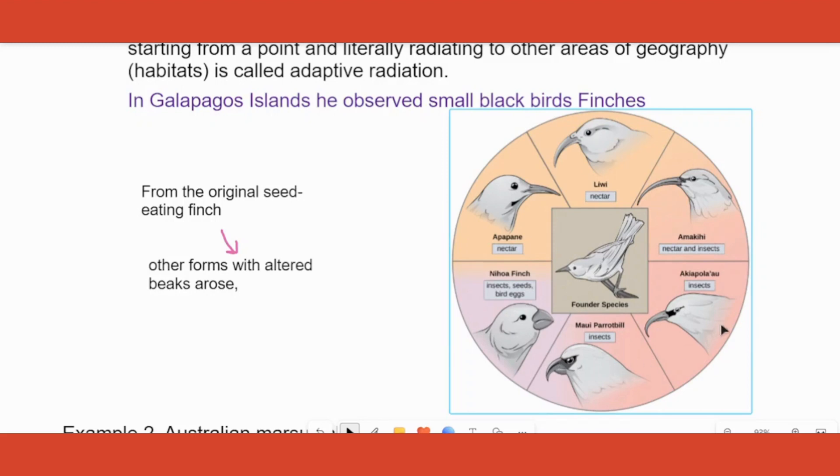So depending on what food was available they all evolved. Now after evolving they started flying out to the different habitats of the same island.